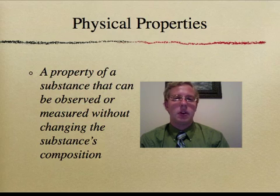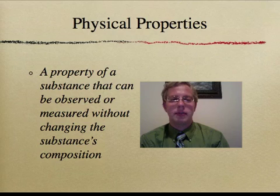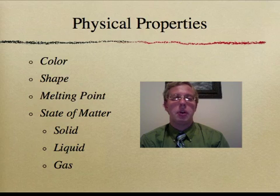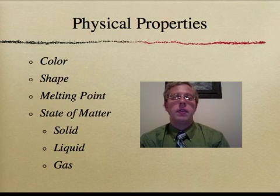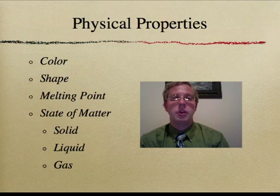An element is defined by its physical and chemical properties. A physical property is a property of a substance that can be observed or measured without changing the substance's composition. Some examples include the color and shape of the element, the state of matter — whether it's a solid, liquid, or gas — and the boiling or melting point of the element. The key thing to remember is that you are not changing the substance's composition when determining these physical properties.